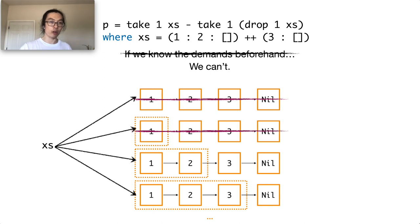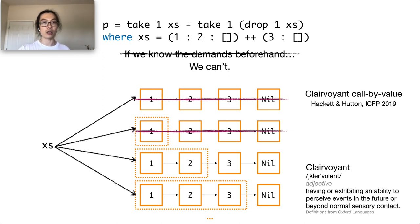This idea is not new. In fact, this is called the clairvoyant call-by-value semantics. It was proposed by Hackett and Hutton at ICFP 2019. In their paper, they define the operational and denotational semantics for the clairvoyant call-by-value.